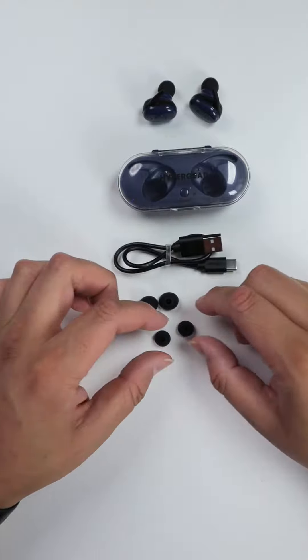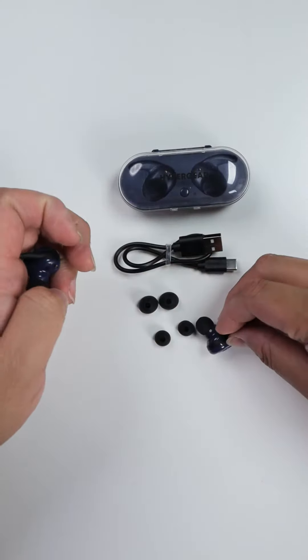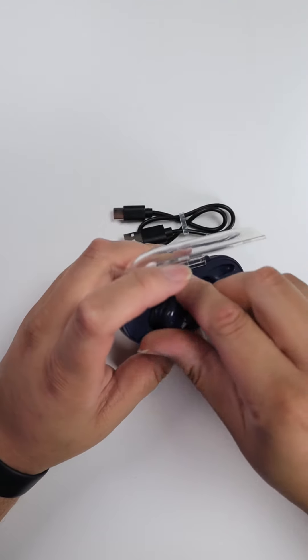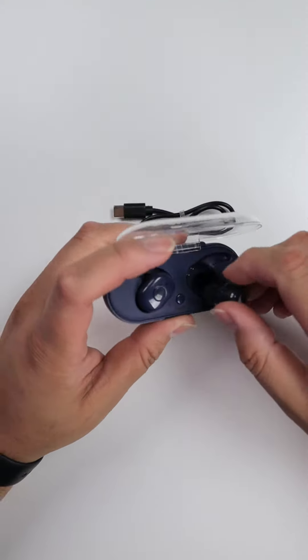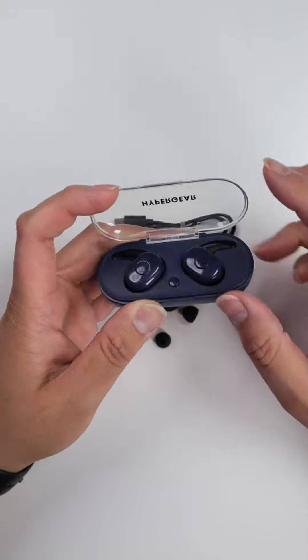Inside, this is the blue one. Music and calls, quick pair technology, sweat proof, ultra lightweight. These are sweat proof and this one has a USB-C input. Let's open it up.